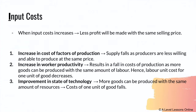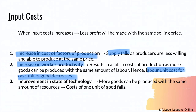Input cost is basically what costs are required for production to occur. When input costs rise, less profit will be made at the same selling price, hence supply will fall. For example, an increase in cost of production means producers are less willing to produce at the same price. On the other hand, an increase in worker productivity — say a skills upgrade — can result in a fall in cost of production, so the labor unit cost per unit of good falls, and hence supply will increase. Similarly, improvement in the state of technology means more goods can be produced within the same amount of time, so the cost per unit of good falls and supply increases.